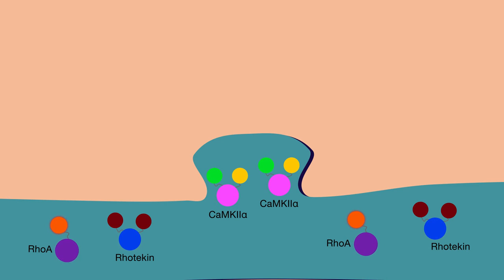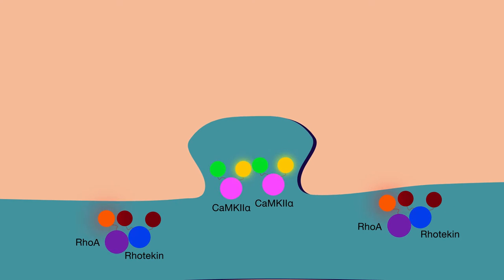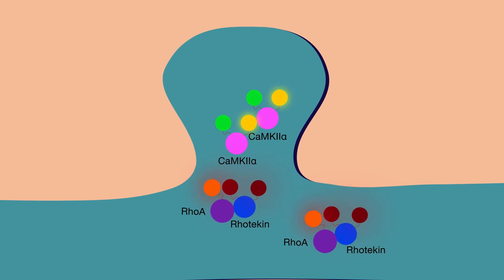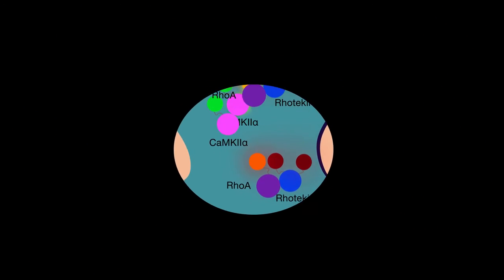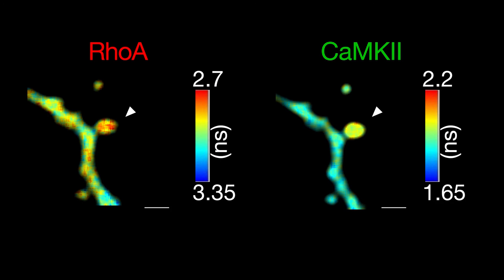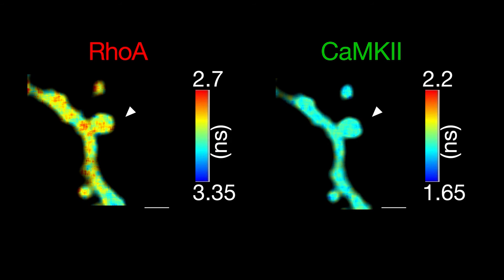Then, using a specialized imaging technique, they triggered structural plasticity in specific dendritic spines. This allowed the researchers to track, for the first time, two signaling molecules simultaneously in individual spines undergoing structural plasticity.